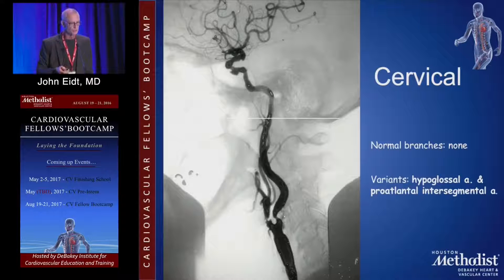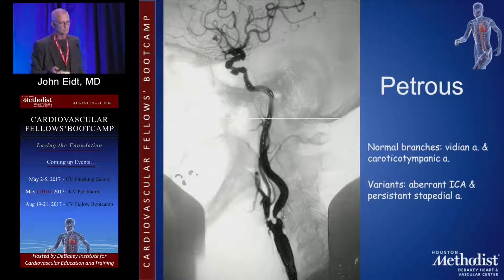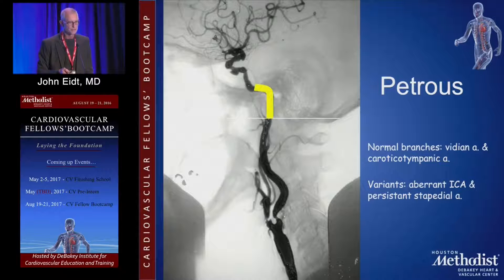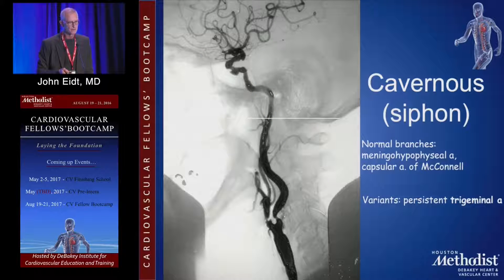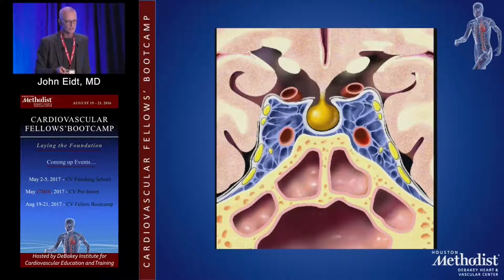The cervical segment is basically below the skull — there shouldn't be any branches. The only real branch you'll probably ever see would be a hypoglossal artery. Then you've got the petrous portion going through the temporal bone, with occasionally a vidian artery and caroticotympanic — not usually important branches. Then you've got the cavernous portion going through the cavernous sinus. We call it the siphon because it's kind of S-shaped. The artery actually goes through the spongiform area, the cavernous sinus.